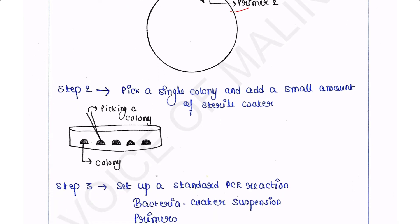Step 2: Pick a single colony with a sterile toothpick and add a small amount of sterile water.